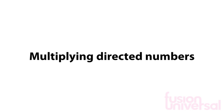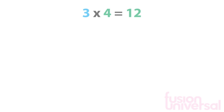We are going to look at multiplying positive and negative numbers in different combinations. Let's start looking at positive numbers. You should be familiar with your times tables — you know that 3 times 4 is equal to 12.